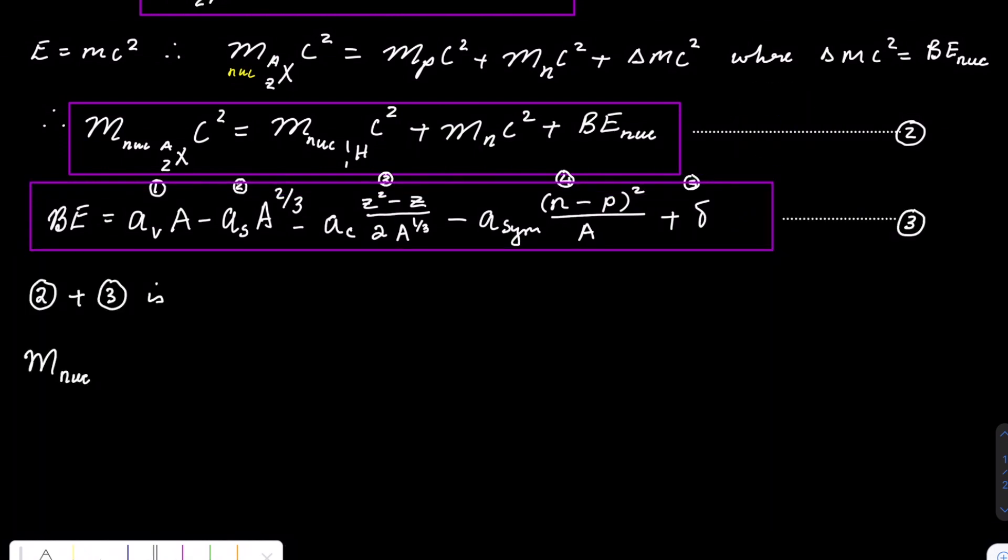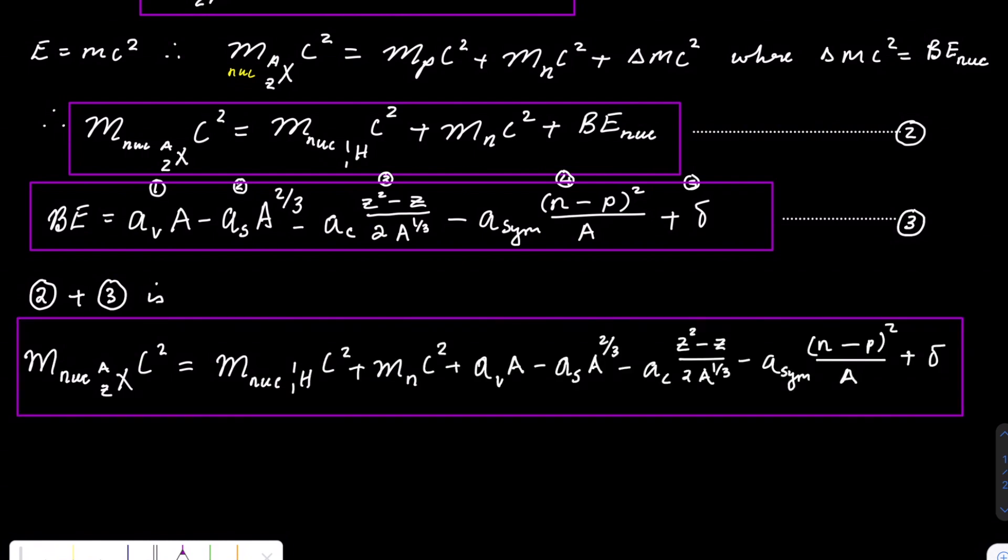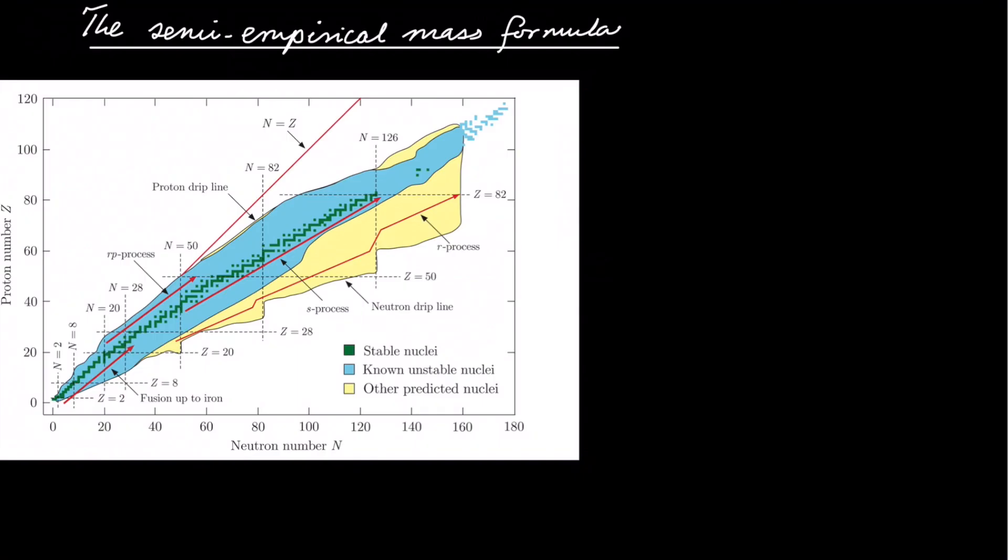So we can combine this equation, which is binding energy equation 3, with equation 2, to get what we refer to as the semi-empirical mass formula. So let's look at the NZ plot, or the ZN plot, as it's shown here.